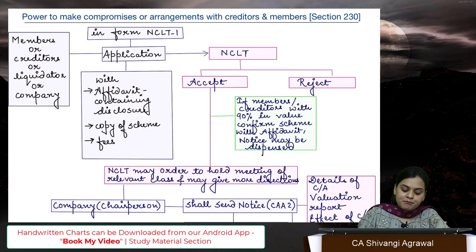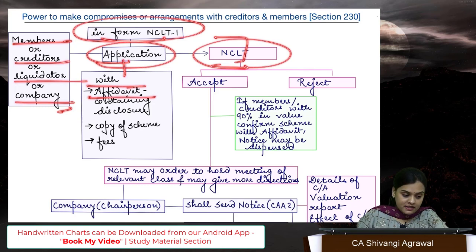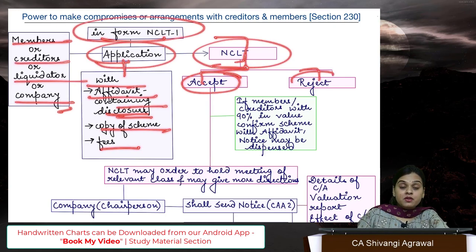In this situation, they have to take permission of NCLT. For taking permission, they will make an application. There is a whole procedure under section 230. It starts with making of an application. Members, creditors, liquidator, or the company can make an application in form NCLT-1 to the NCLT.